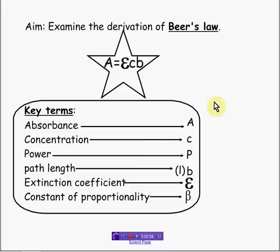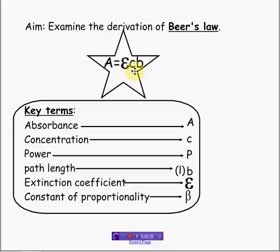Hello. This lesson is intended to show the derivation of Beer's Law. Beer's Law is defined as the absorbance is equal to the extinction coefficient times the concentration times the path length. We'll get more into that later. I just wanted to give you an overview of Beer's Law.